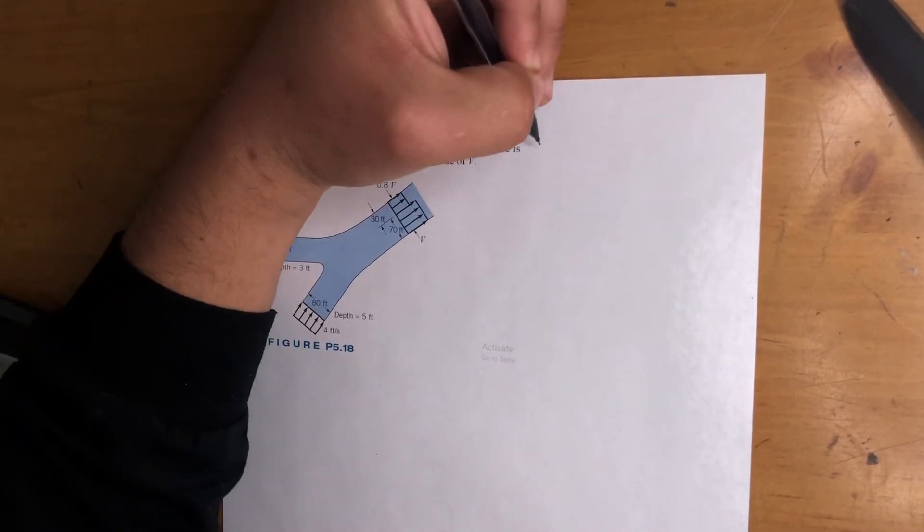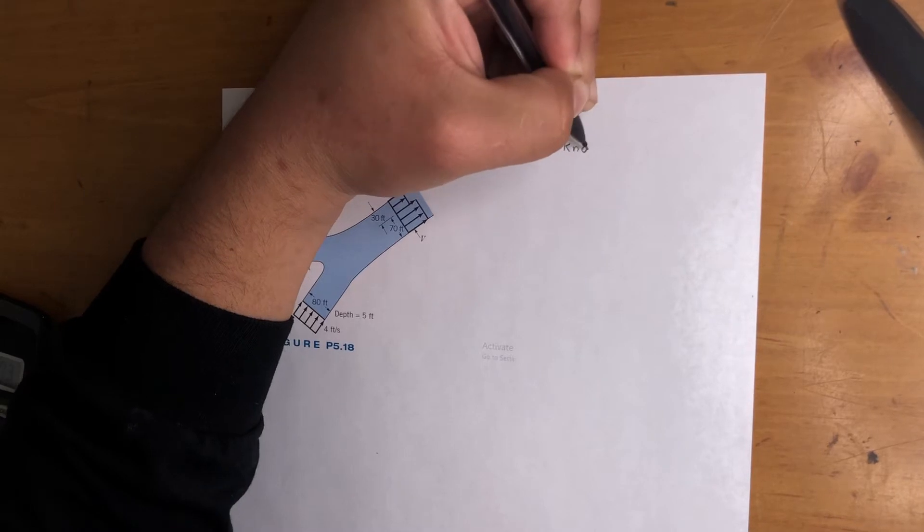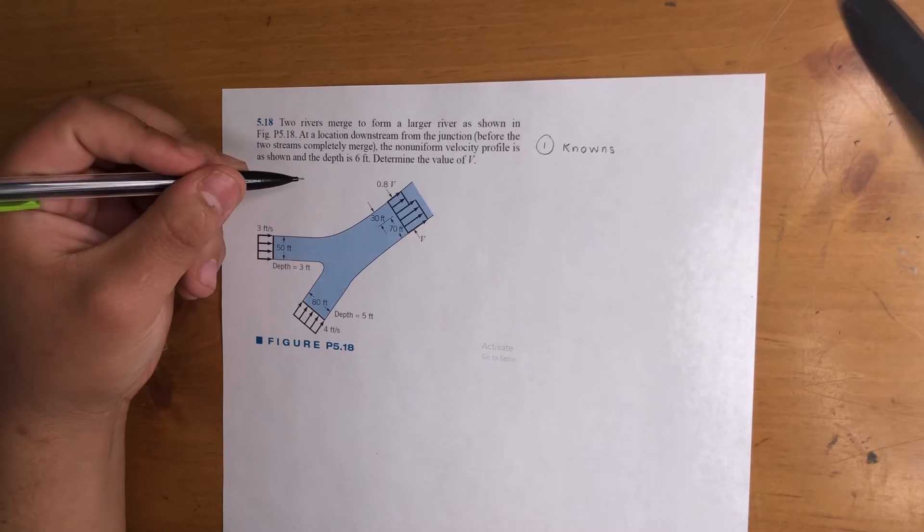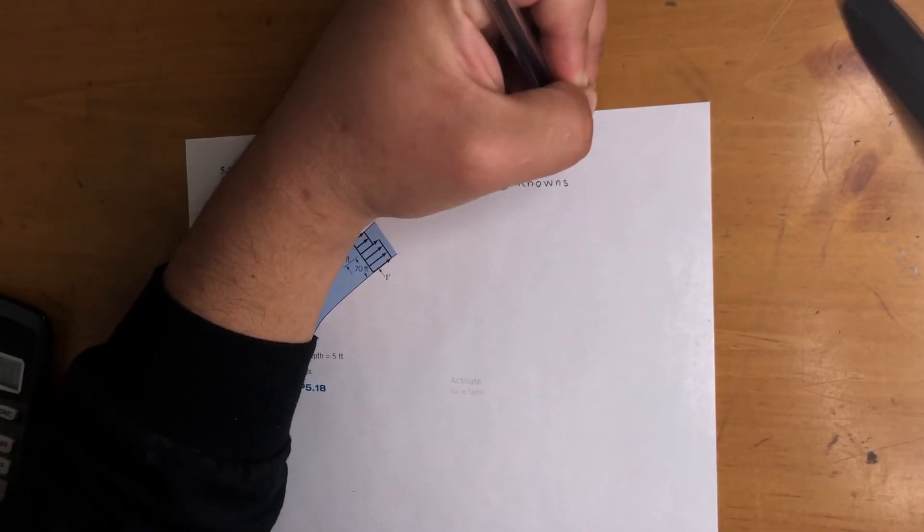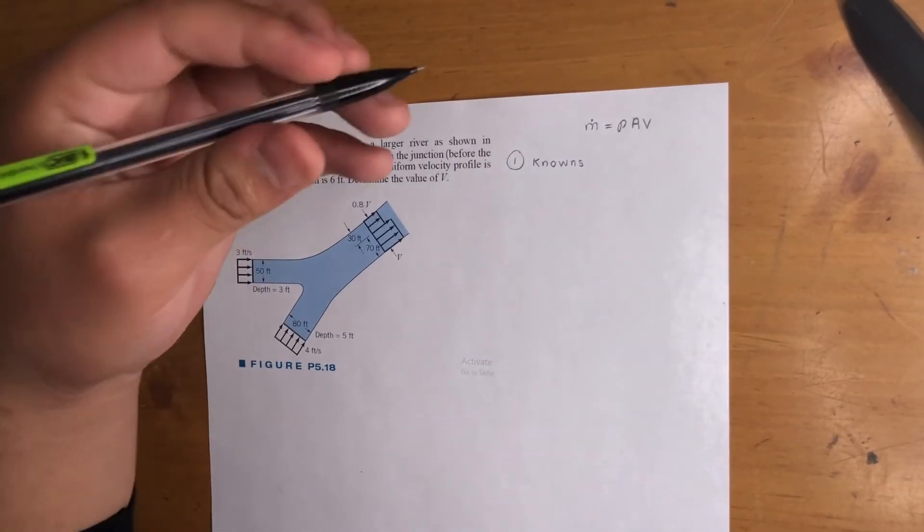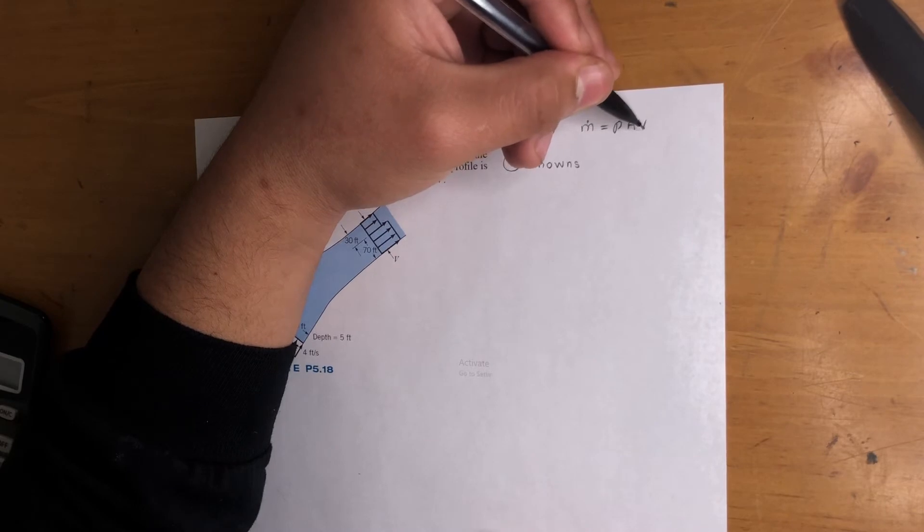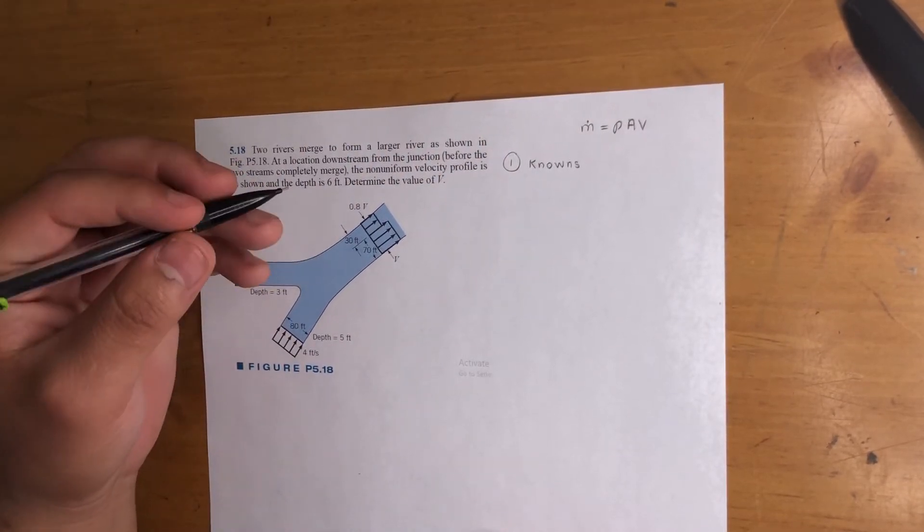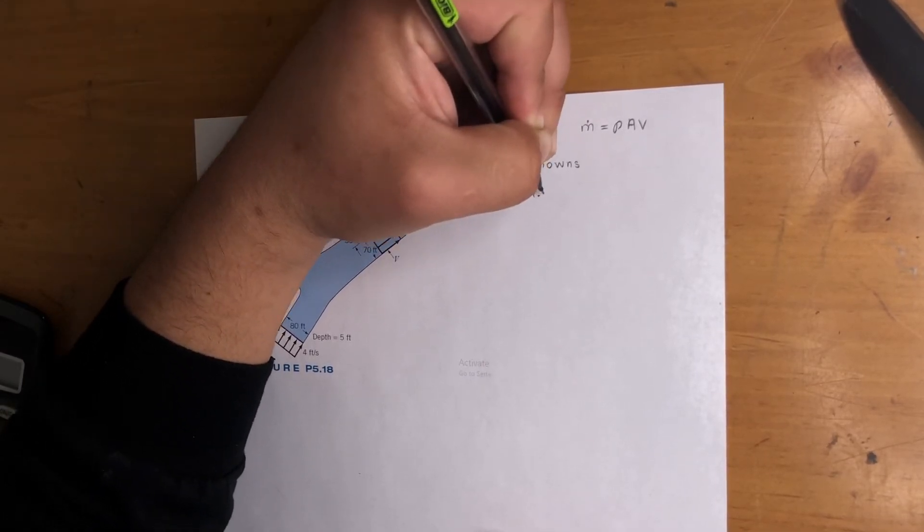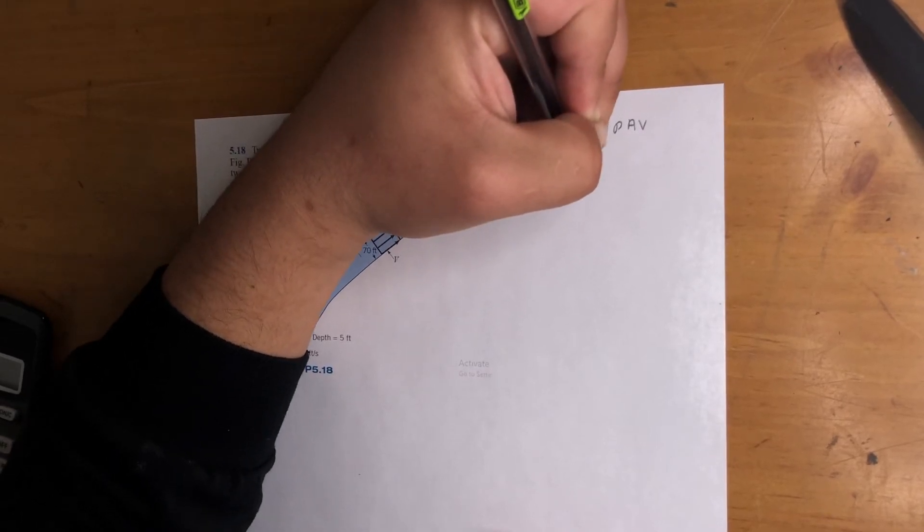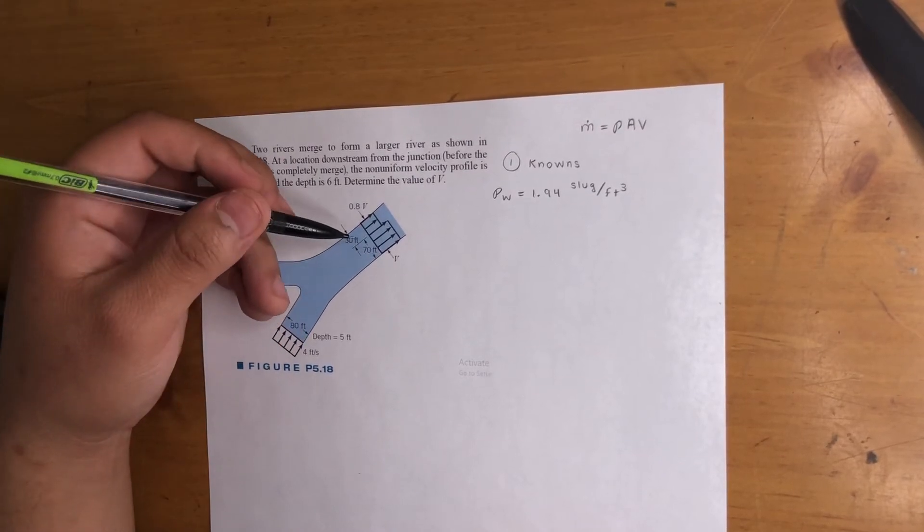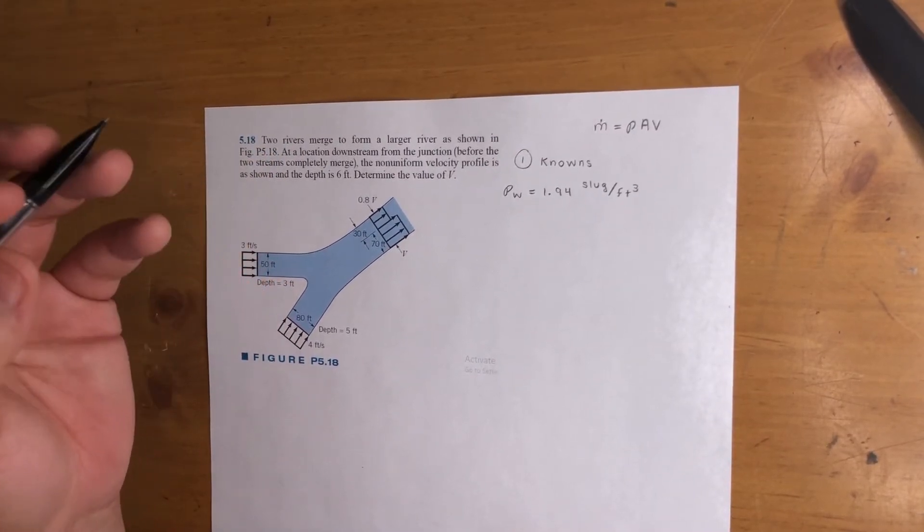Alright, so first step, determine the knowns. The ultimate goal of these problems is mass conservation. So this is the formula you will need: ρAV, right? We need density, the area, and velocity of the entrances and the exits. Let's go ahead. We're dealing with water, so density of water is 1.94 slugs per feet cubed. We're dealing with feet.